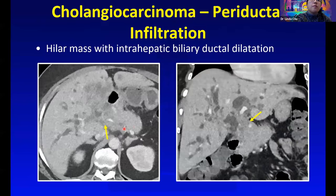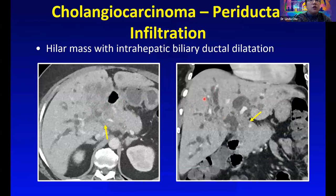Here's an example of a typical periductal infiltrative cholangiocarcinoma, in which we see this infiltrative hilar mass. Also helpful are secondary signs of intra-hepatic biliary ductal dilatation that would clue us in that it's a cholangiocarcinoma.